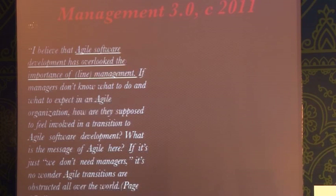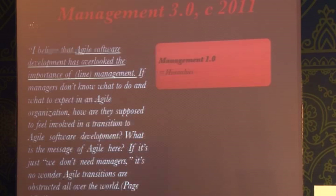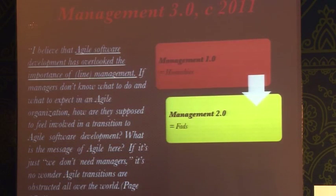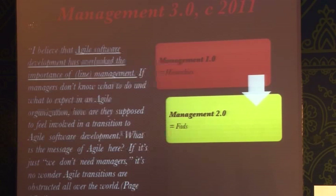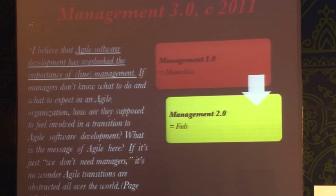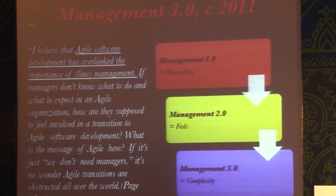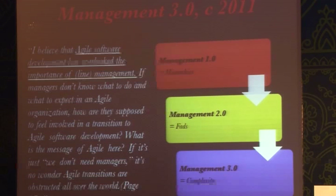That was the hypothesis with which Jurgen started working. He came up with the thought process that Management 1.0 was really all about hierarchies — from the time of Winslow Taylor and Henry Fayol. Then Management 2.0 was really all about fads — he calls Six Sigma, ISO, CMM, and many of these things fads. We just tried to slap them on a structure that was already crumbling, believing for the next 20 years that this would be the next silver bullet to fix management.